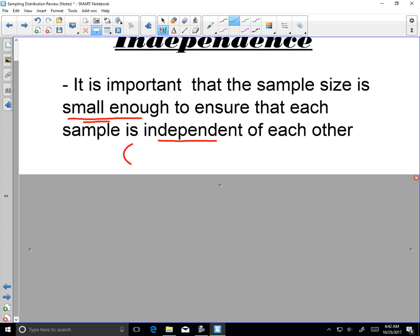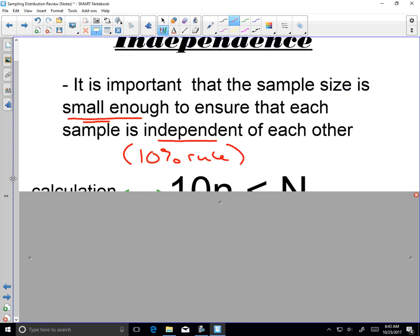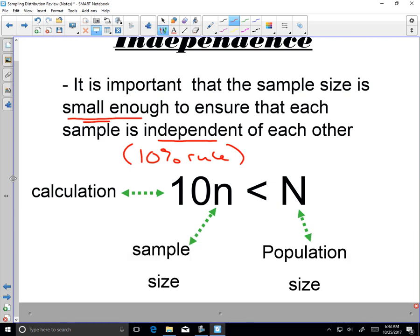So what our goal is, we also call this the 10% rule. We want to ensure that our sample is less than 10% of the population. Because if you think about it, breaking the population up into small chunks, there's less chance of overlapping data from one sample to the next.